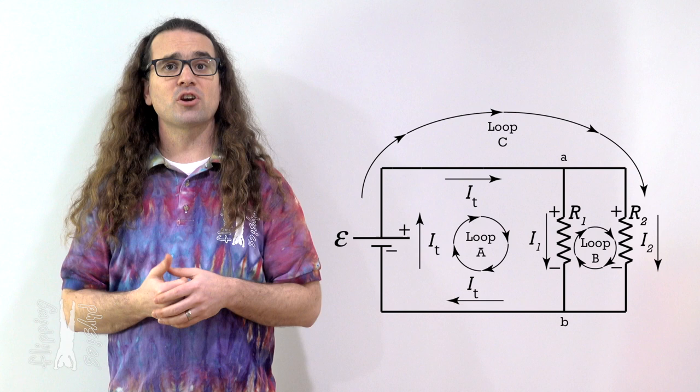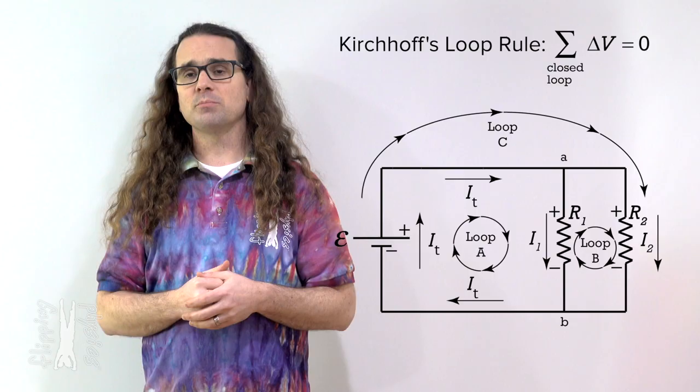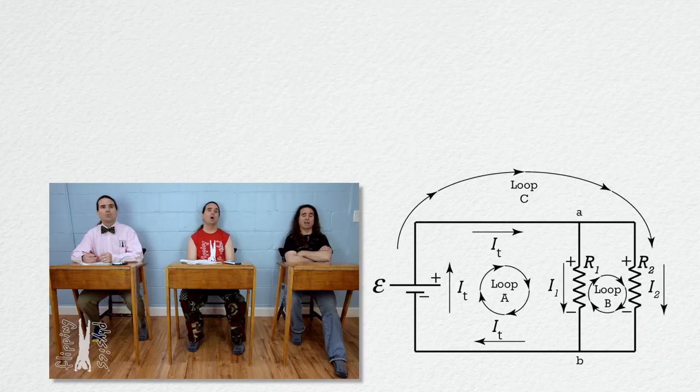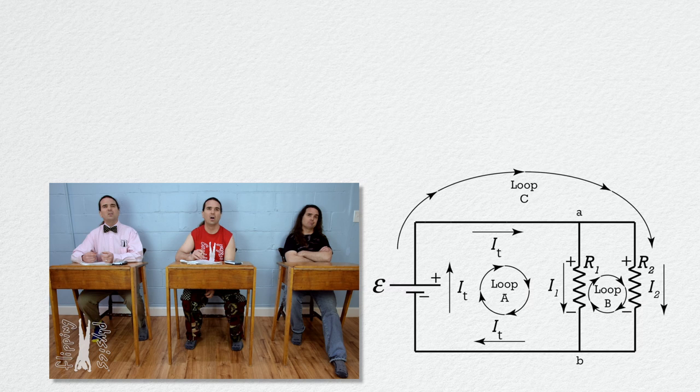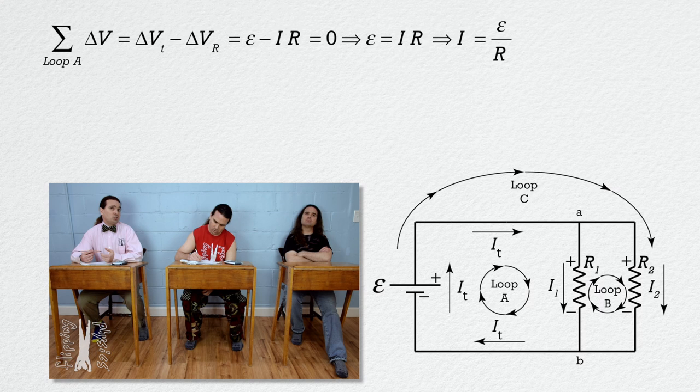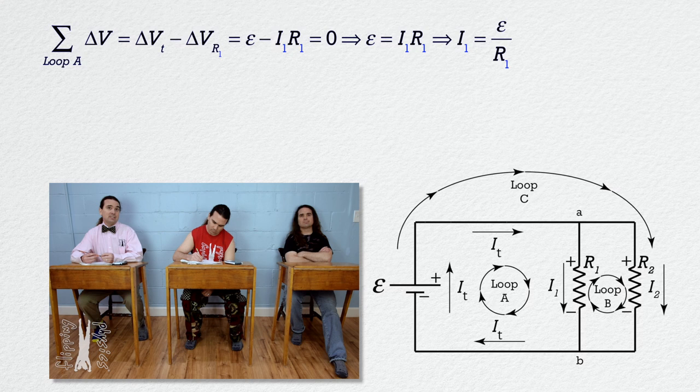Now let's determine the Kirchhoff loop equations for all three loops. Loop A is essentially the same as the previous circuit, just with a subscript added to the current and resistance — that's the only difference. For loop C, the net voltage around loop C equals the voltage across the battery minus the voltage across resistor 2, which is exactly the same form as loop A, only replacing the 1 subscripts with 2s.